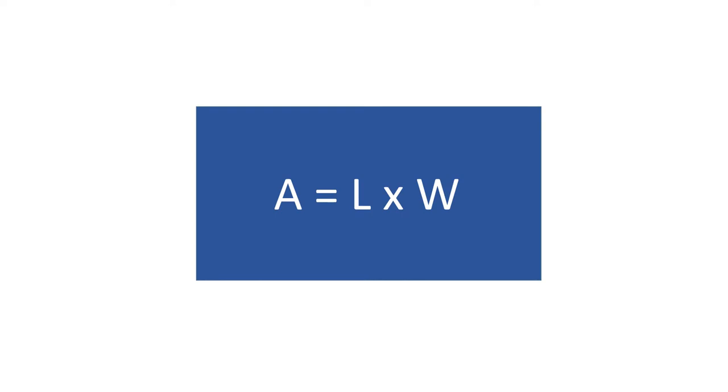If we turned this into a division problem, it would look like this. The total area divided by one dimension equals the other dimension. For example, area divided by length equals width, or area divided by width equals length.